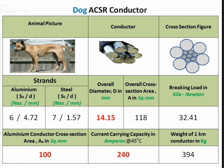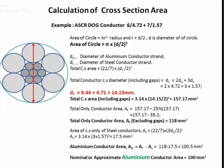Remember: total conductor area is 118 mm² and only aluminium area is 100 mm². Current carrying capacity is 240 A and weight of 1 km conductor is 394 kg. Now we will see how the aluminium conductor area is calculated. Six aluminium strands with diameter 4.72 mm and seven steel strands with diameter 1.57 mm are taken as the example of Dog ACSR conductor.